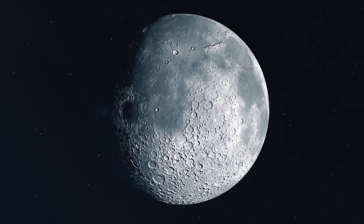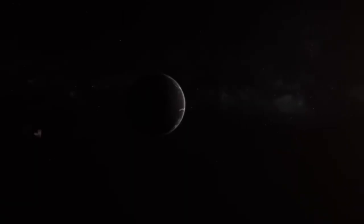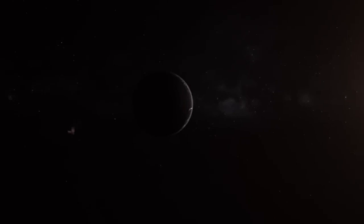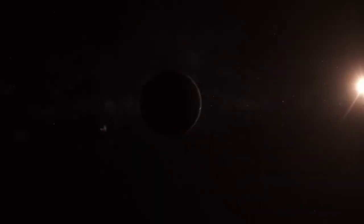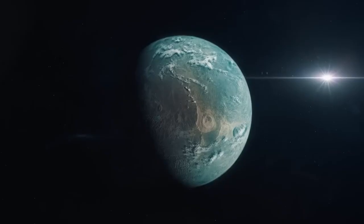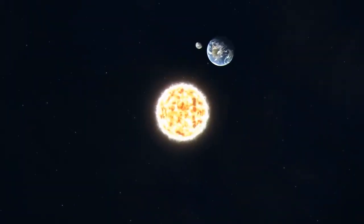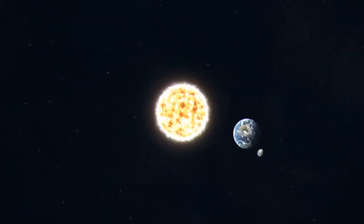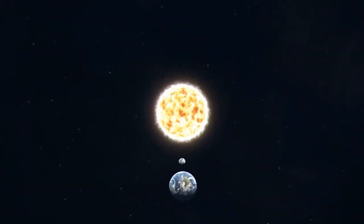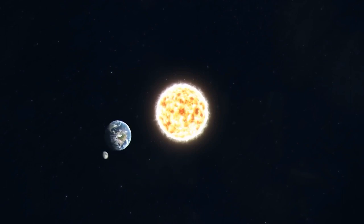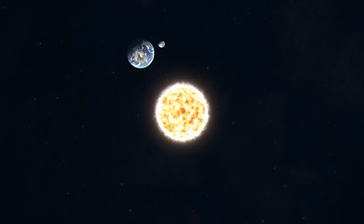The planet is tidally locked, just like our moon. This means that its orbital period is the same as its rotational period, so one side of it is always in the dark. For example, it takes the moon 28 days to go around the Earth, and 28 days to turn once on its own axis. This means that the same side of the moon is always facing Earth.